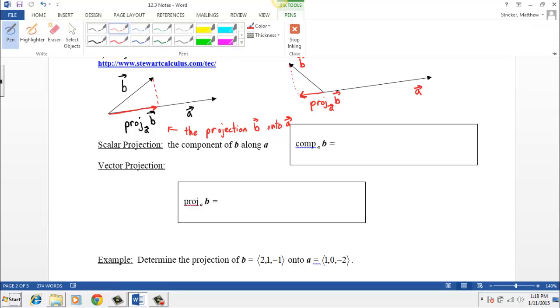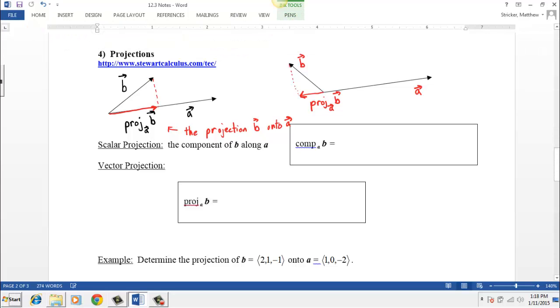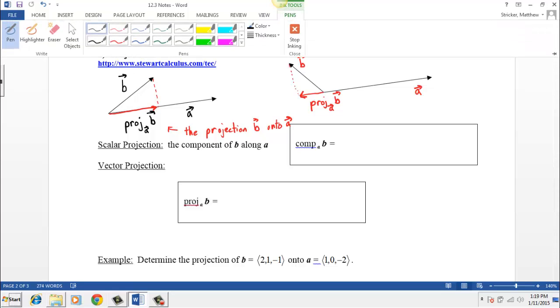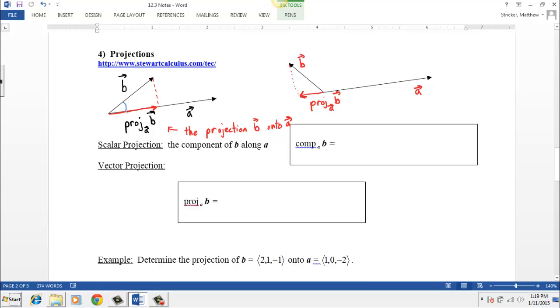Usually, when one first starts to talk about vector projection, we talk about the component projection first, which is a scalar. And all the component is, is that we take this vector B, we know any vector has two components. Most of the time we think of them as an X and a Y component. But in this case, we want to think about it as the component of vector B in the direction of vector A, or along vector A. And so, if we consider these two vectors, B and A, to have an angle theta in between them.